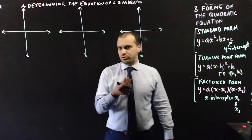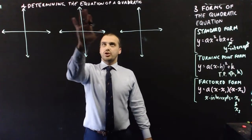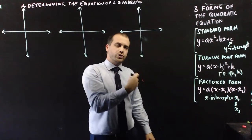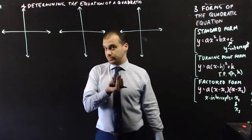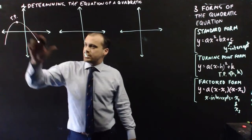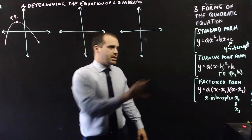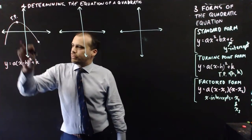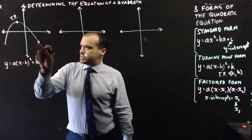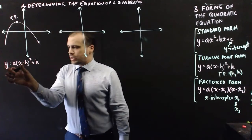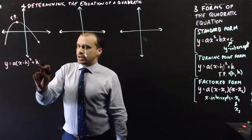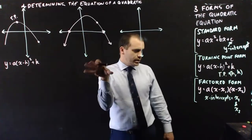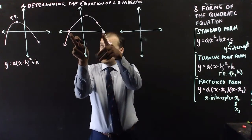If you were given a quadratic with some specific information, you could determine the equation of that quadratic. Which form you work towards really depends on what information you're being given. If you were given the turning point and some other random point, it would make sense to start working towards turning point form. You can easily put the turning point in for h and k, sub the other point in for y and x, and once you've done that you can easily find a. If you know what a is, you know the whole equation.